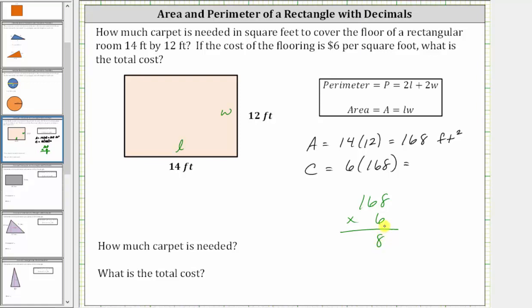Six times eight is 48. Perform an exchange with the four. Six times six is 36 plus four is 40. Record the zero. Perform an exchange with the four. And six times one is six plus four is 10. The product is 1,008.